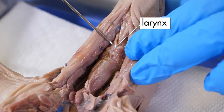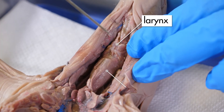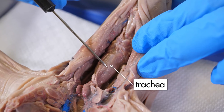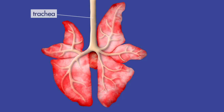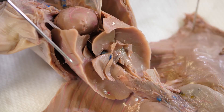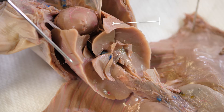From the larynx, air flows through the trachea. The trachea branches into two bronchi, which transport air to the lungs. Since the pig is a mammal, its lungs are the primary organs used for respiration.